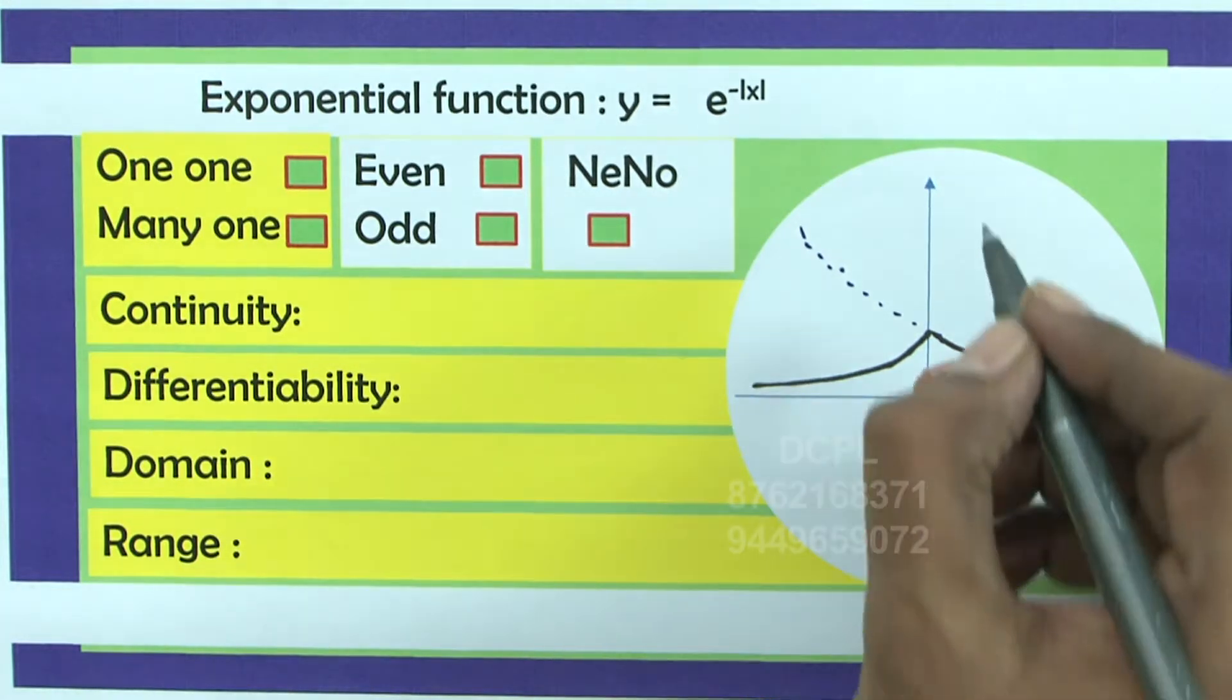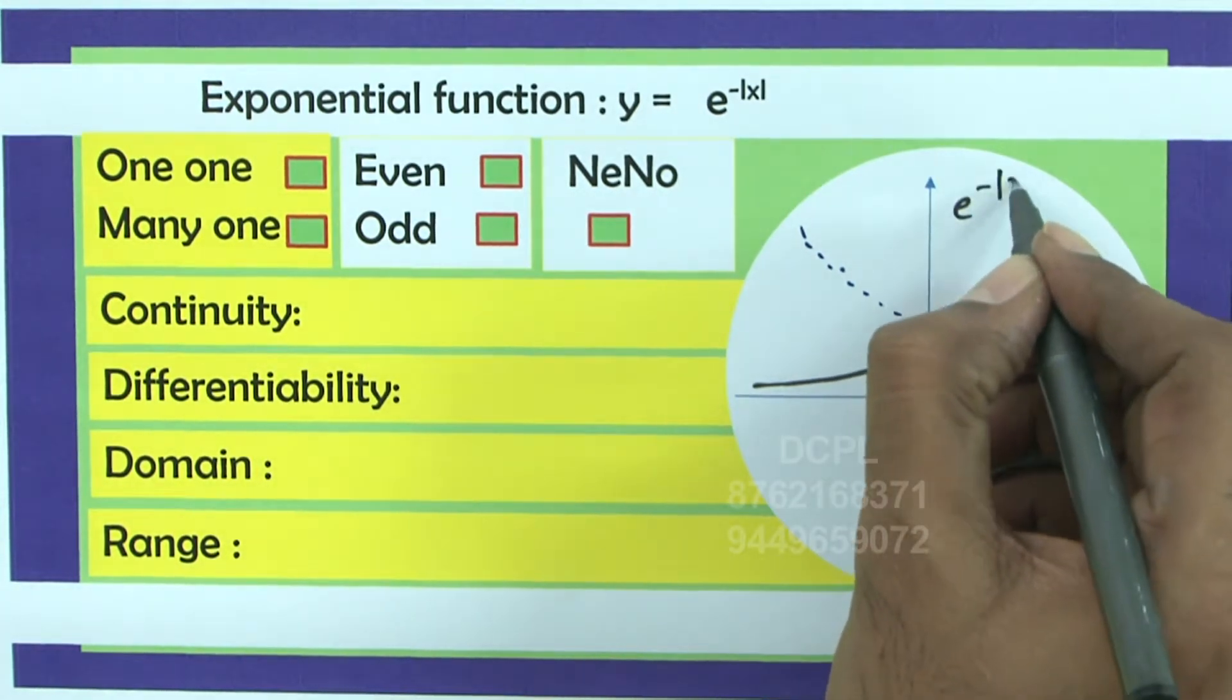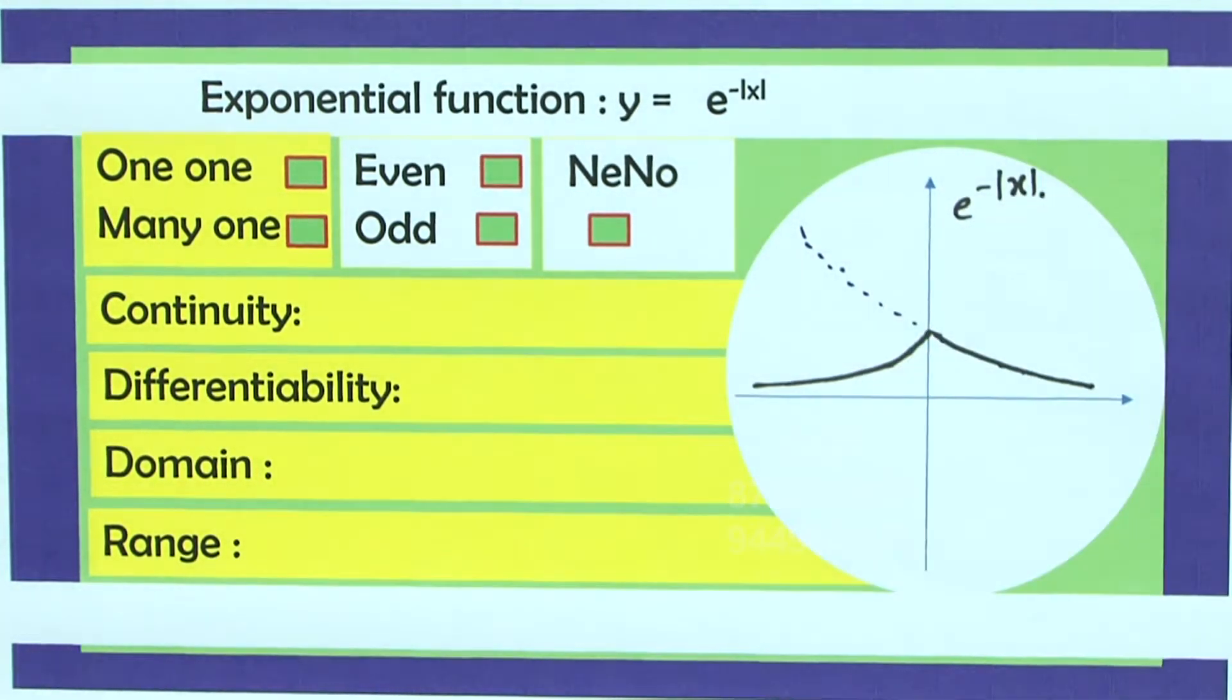So this is e power minus mod x. See how simple it is.